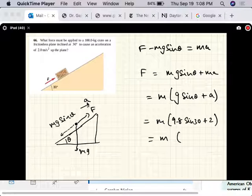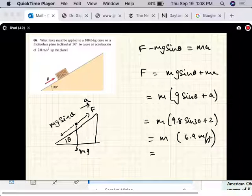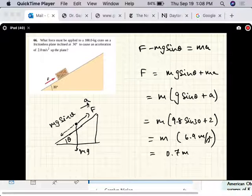4.9 plus 2 equals 6.9 meters per second. I'll do the number in a second, but this is 0.7g, so 0.7mg.